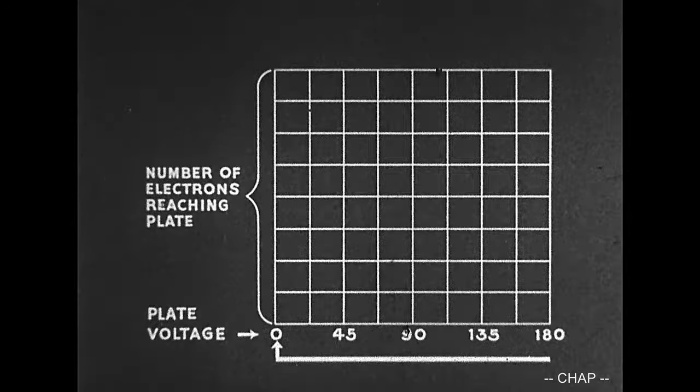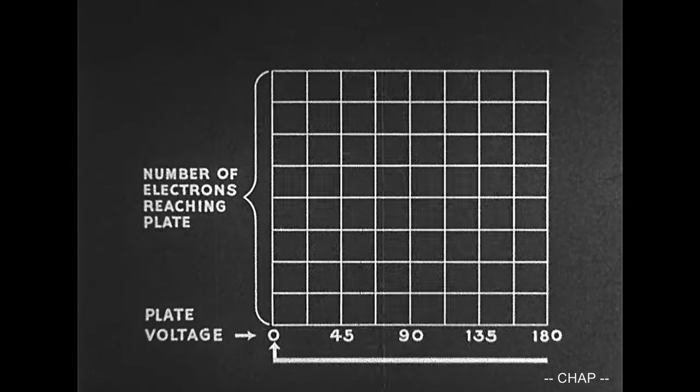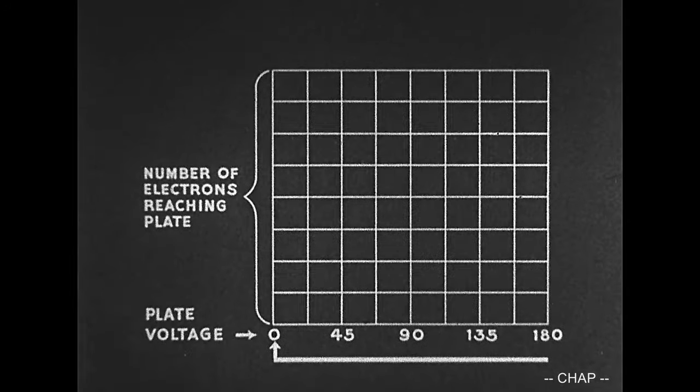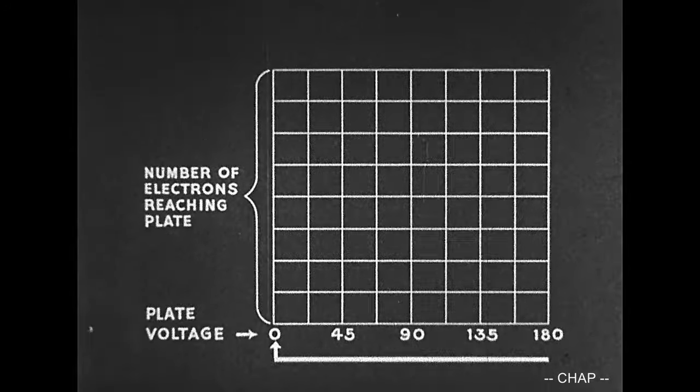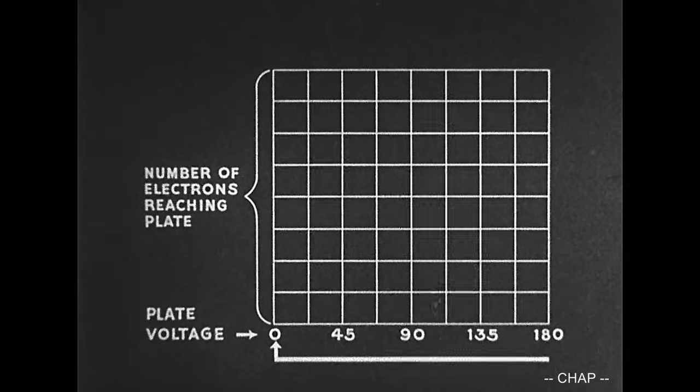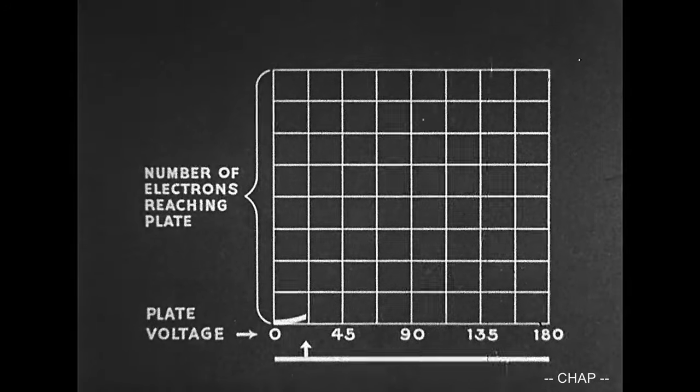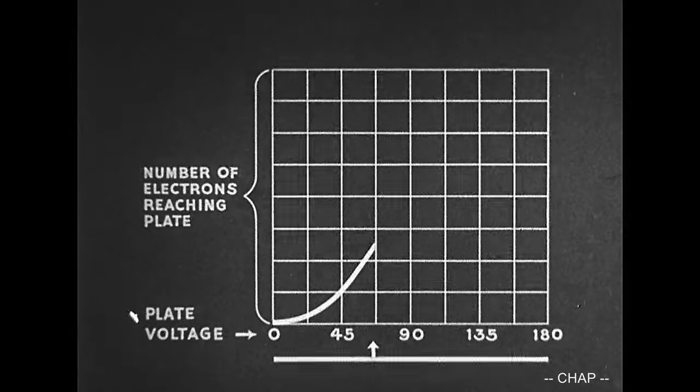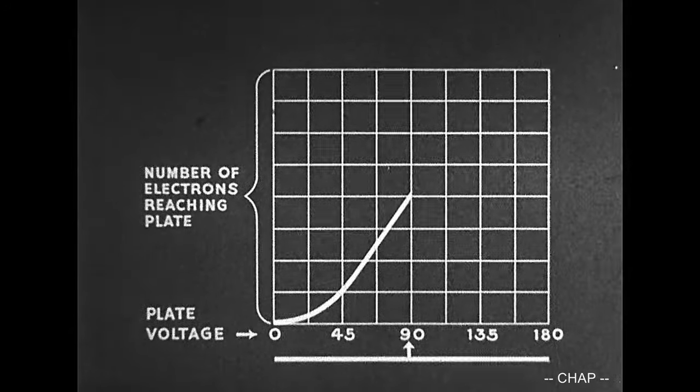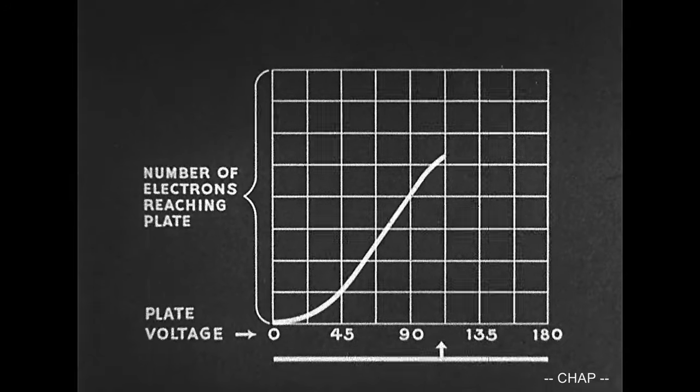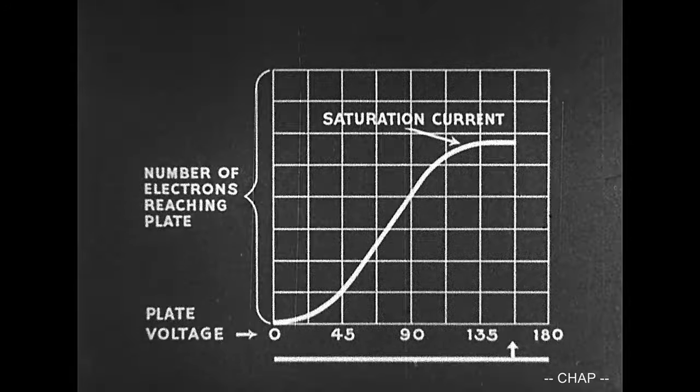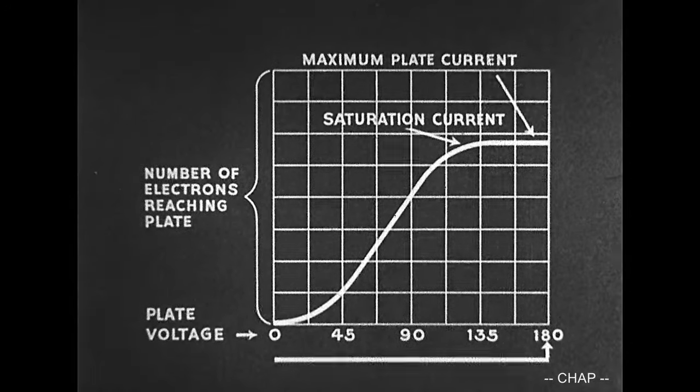The effect of plate voltage upon the number of electrons reaching the plate may be charted. Increasing the plate voltage results in an increasing number of electrons or plate current. This increase continues to the saturation point. This is the maximum plate current for this particular tube.